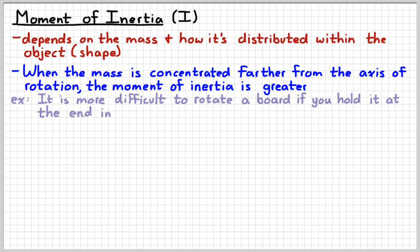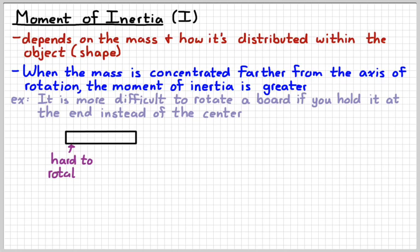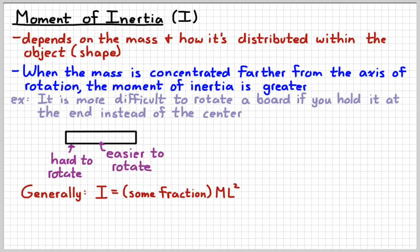And so a good example would be if you ever try to pick up like a long board, it's like a 2x4, try to pick it up. Probably you're going to instinctively pick it up by holding it in the middle. The reason that you're going to pick it up in the middle is because it's more difficult to rotate it if your hand is farther away from the majority of the mass. So it's hard to hold a board at the end and pick it up or rotate it, whereas it's a lot easier if you grab it in the middle. The difference is where the mass is located. So the farther away the mass is from the axis of rotation, the bigger the moment of inertia and therefore the more difficult it is to make it rotate.